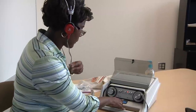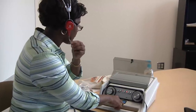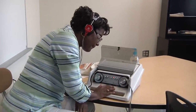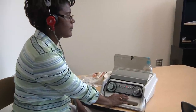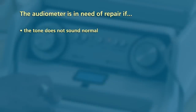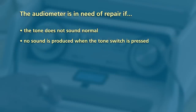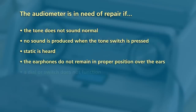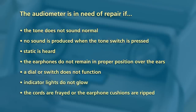With the headset on, push the tone button and move the cords, listening for static or a loose connection. Sit where the children will sit and rest your head and arms in positions you expect the children to sit — listen for sounds conveyed through the table, with elbows resting on the table, head on hands, and also listen for sounds from the chair with your head back against the chair rest to see if vibration from the room may interfere with the test. The audiometer is in need of repair if the tone does not sound normal, if no sound is produced when the tone switch is pressed, if static is heard, if the earphones do not remain in proper position, if a dial or switch does not function, if indicator lights do not glow, or if the cords are frayed or the earphone cushions are ripped.